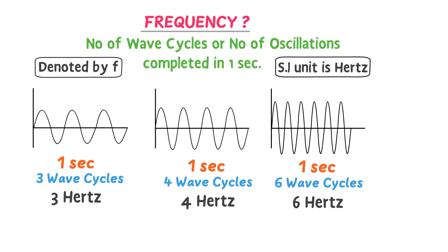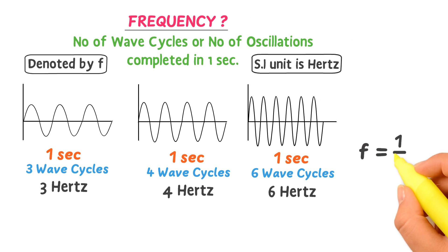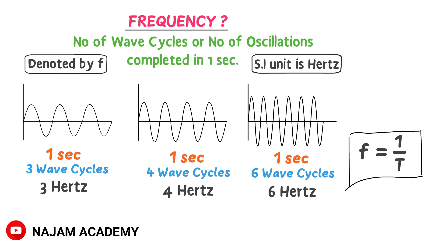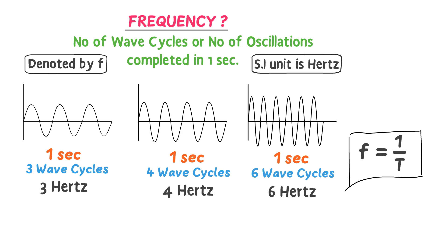Also remember that frequency is equal to the reciprocal of time period: f = 1/T. Thus frequency is the number of wave cycles or oscillations completed per second. This was all about amplitude, wavelength, time period and frequency.